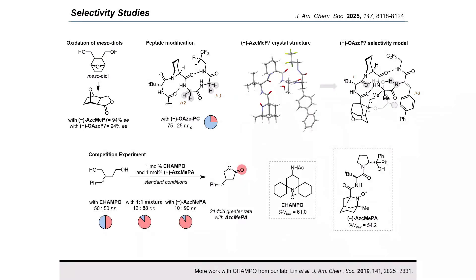As for the oxidation of the less-hindered site, we don't yet know exactly what interactions are providing high selectivity, but I'll leave you with this competition experiment. One would think that an alternative approach for achieving high selectivity could have been to simply increase the buried volume of the catalyst, right? In reality, highly hindered CHAMPO actually gave very poor selectivity. In this competition experiment, we found that ASC-MEPA has a 21-fold greater rate than CHAMPO for the oxidation of the benzyl substituted diol, indicating that increasing steric bulk is not a viable strategy due to a loss in reactivity.